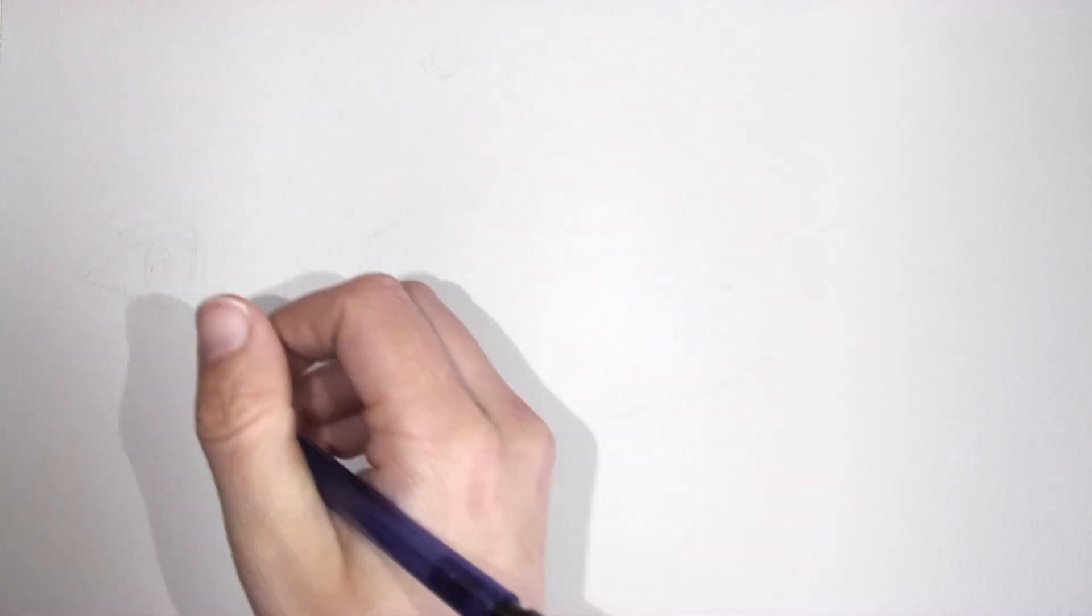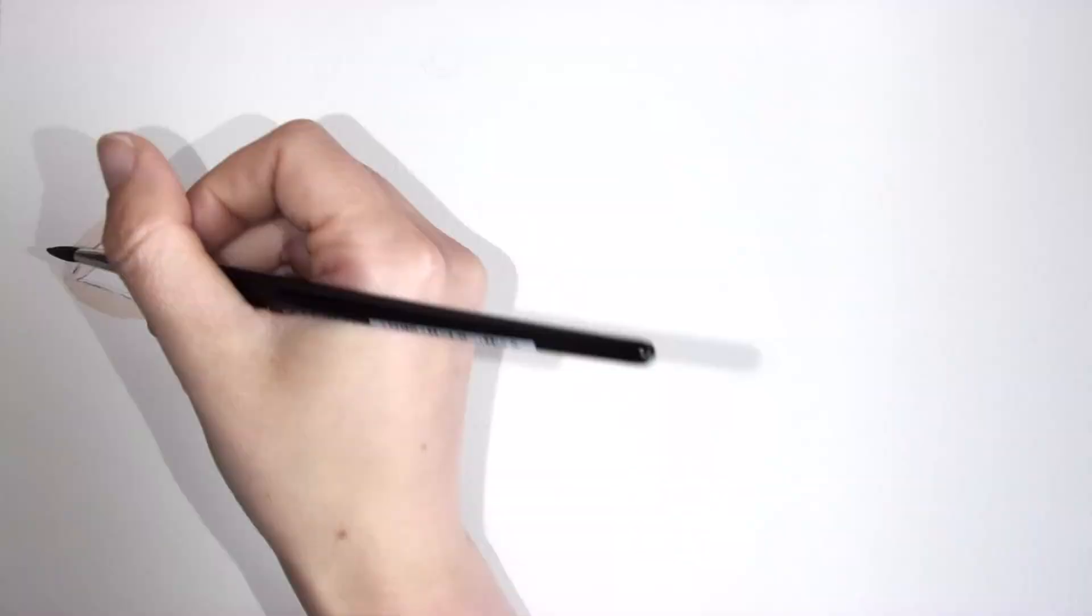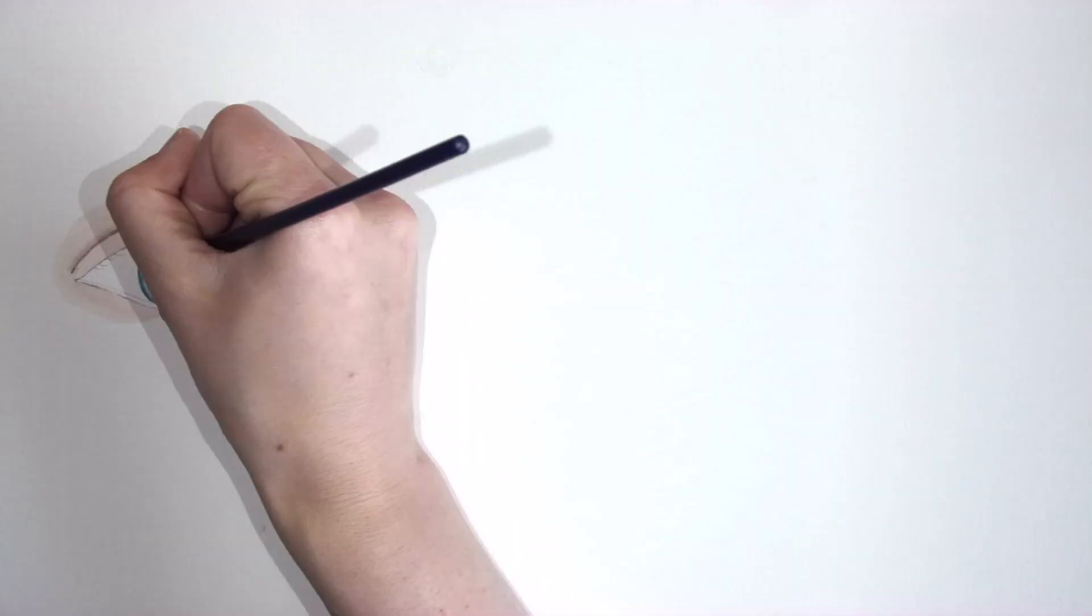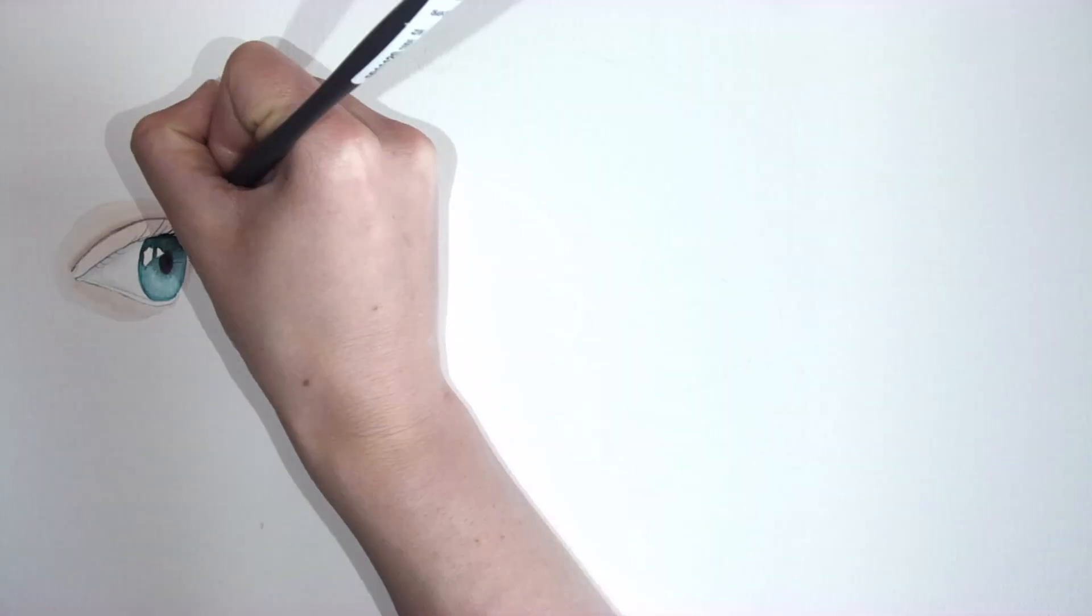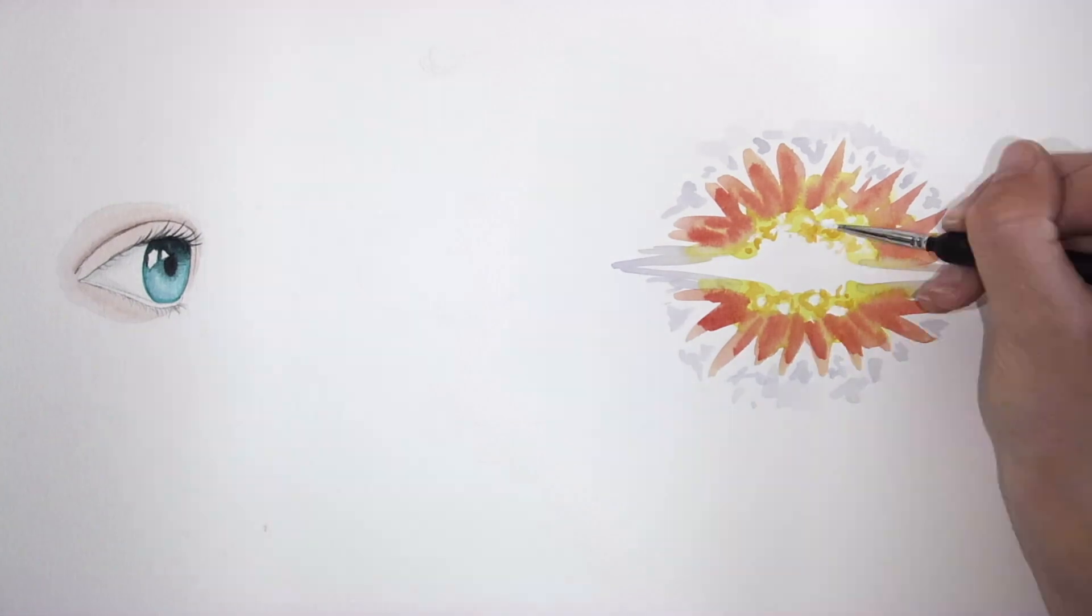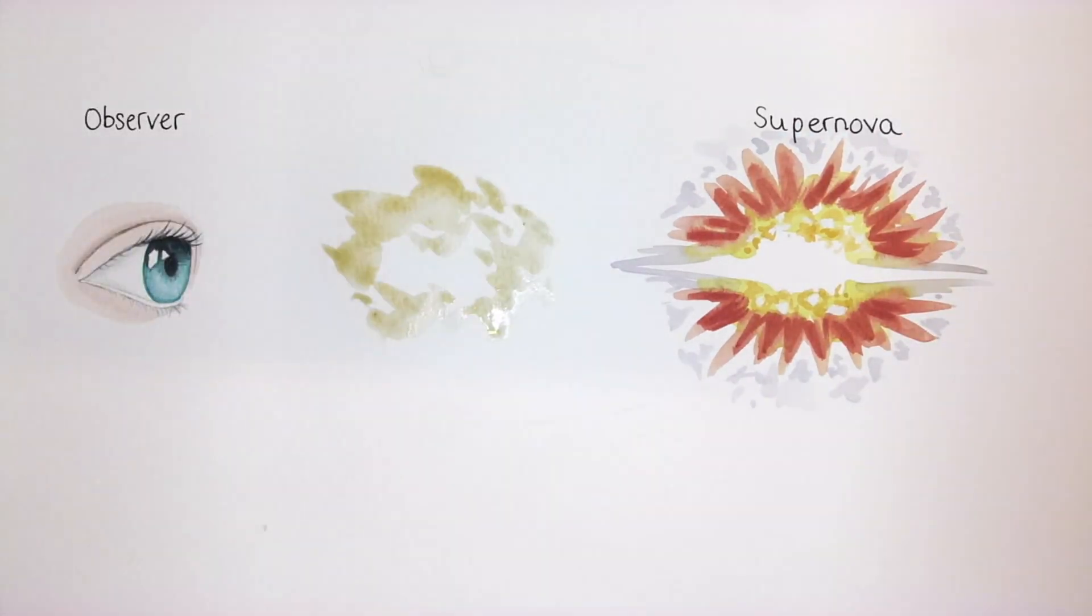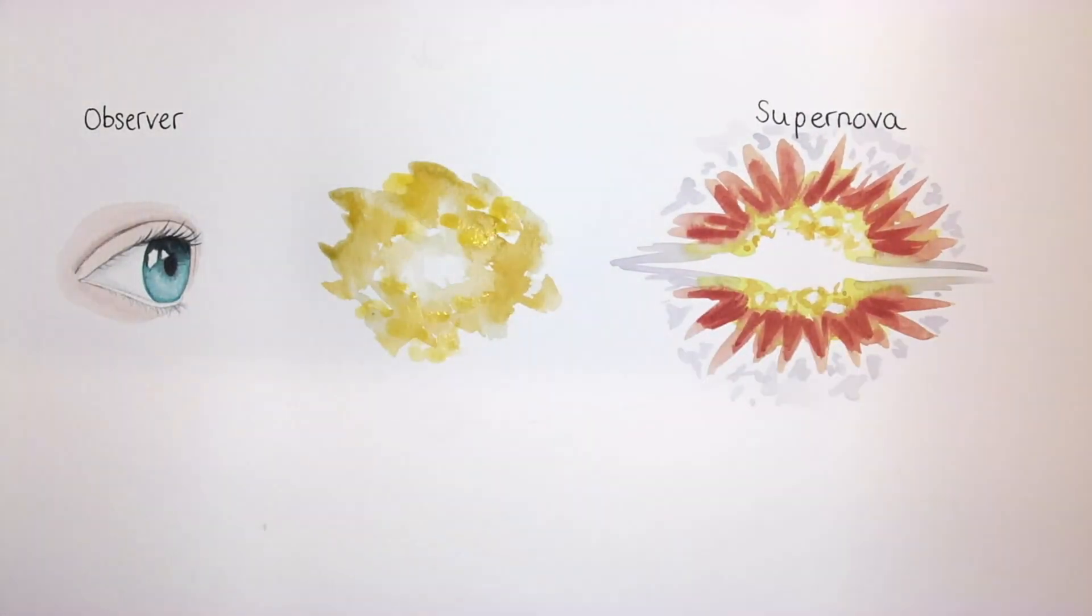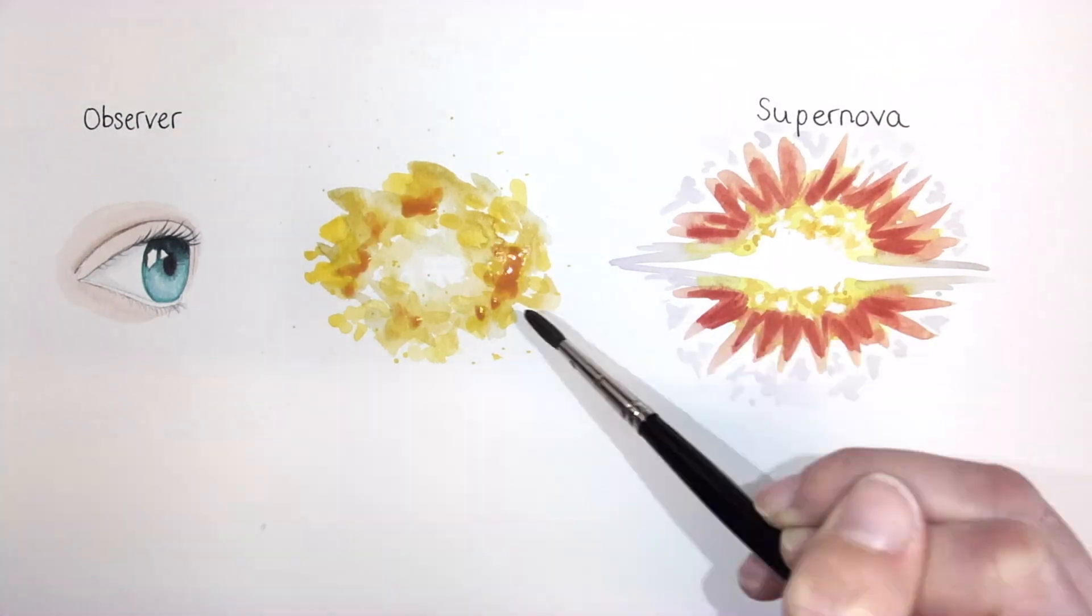The four dots of Supernova Zwicky are created by a remarkable phenomenon called gravitational lensing. When we observe a distant object, such as a supernova explosion, a galaxy can be positioned between us and the supernova and act as a gravitational lens.